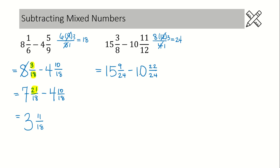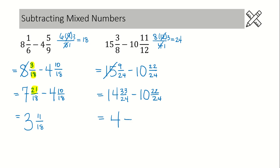We can't subtract right now because 9 is smaller than 22, so we're going to have to borrow. We cross out the 15 and that becomes 14. We write in the denominator of the first fraction, then write down the rest of the question so we can come back and figure out what the numerator is. The shortcut: look at your fraction above and add the numerator to the denominator — in this case 9 plus 24 gives 33. Now that the numerator on our first fraction is larger, we do our subtraction: 14 minus 10 is 4. We do not subtract the denominator. Then subtract the numerators: 33 minus 22 is 11.